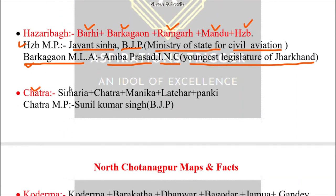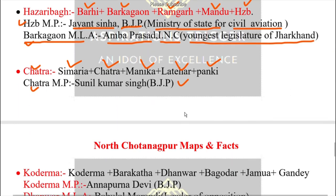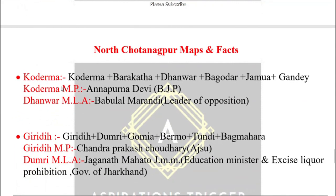Now I'm going to talk about Koderma Parliamentary Constituency. Koderma Lok Sabha constituency consists of: Koderma, Barkatha, Latikha (Latehar area), and Paki — these are the Assembly constituencies under Koderma. The Member of Parliament from Koderma is from the BJP. The Assembly constituencies under Koderma Parliamentary Constituency are: Koderma, Barakatha, Dhanwar, Bagodar, Jamua, and Gandey.